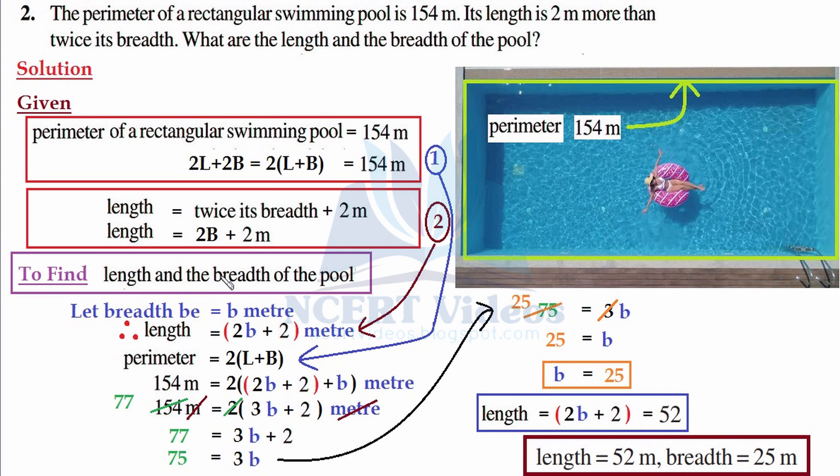Obviously, why you took it as small letter b? Due to a very obvious reason: b stands for breadth, so that you don't get confused. No need to take it x, y, or z. Just write the first letter of the unknown.